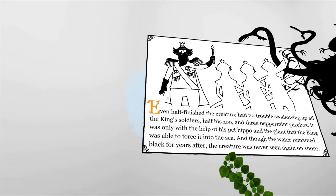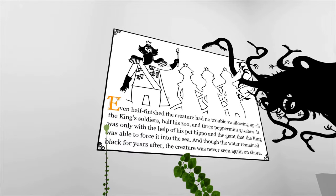And let's end it with this. Even half finished, the creature had no trouble swallowing up all the king's soldiers, half his zoo, and three peppermint gazebos. It was only with the help of his pet hippo and the giant that the king was able to force it into the sea. And though the water remained black for years after, the creature was never seen again on shore.